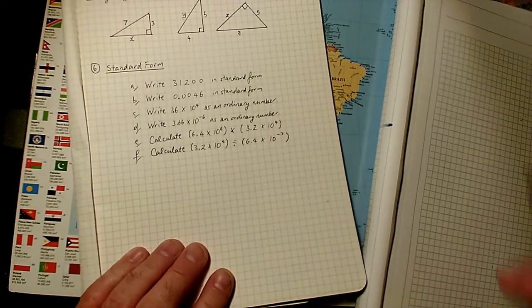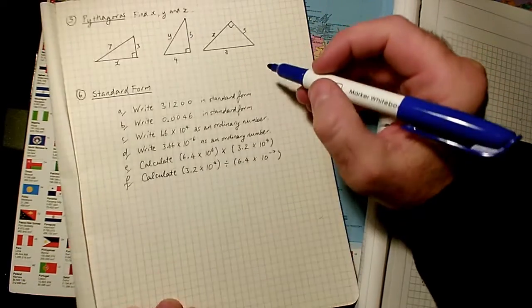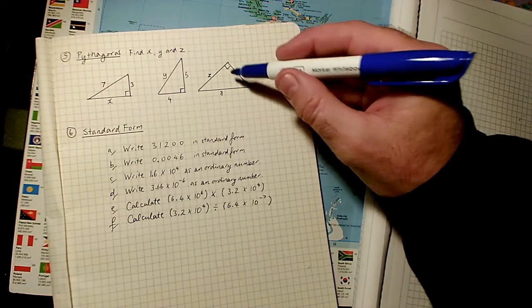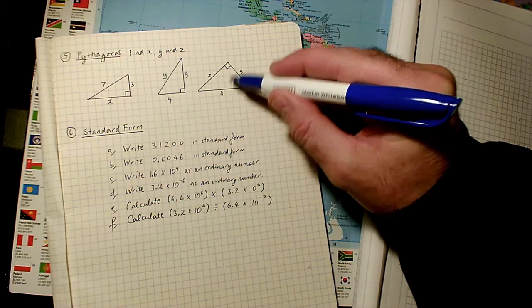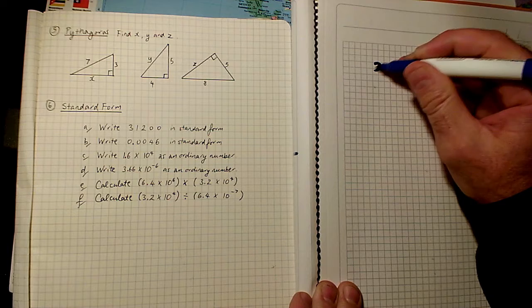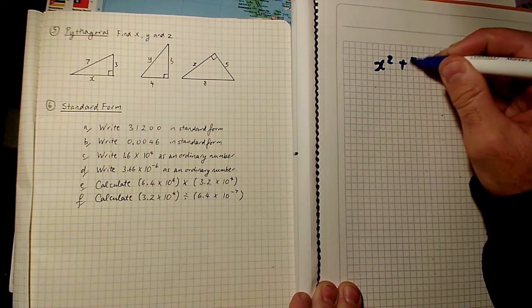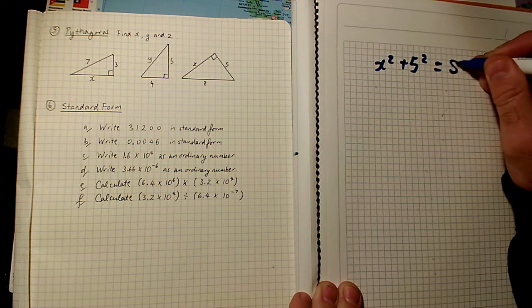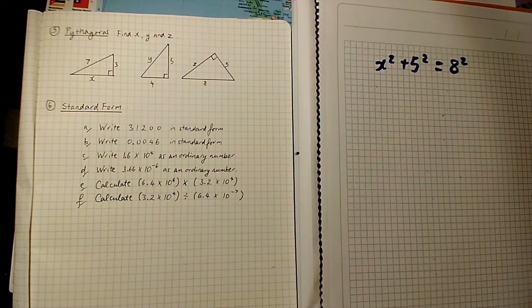Last Pythagoras question. Problem with this one is just that the diagram's been turned around a bit. But you can see that the 8 is the longest side because it's opposite the 90 degree angle. So I'm going to write x squared plus 5 squared, that's the 2 shorter sides, equals 8 squared, that's the longest side squared.